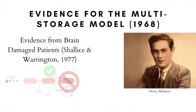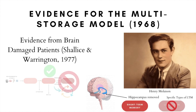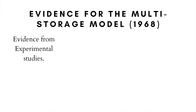Famous cases such as that of Henry Molaison, famously known as HM, who underwent severe bilateral medial temporal lobectomy — which led to removal of most of his hippocampal region — are a good example of this. His STM capacities remained intact while some specific types of LTM were damaged.